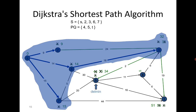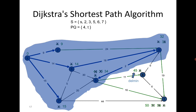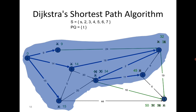Among 34, 51, and remaining vertices, 34 is the minimum, so we go to vertex 5. From vertex 5, vertex 4 is reachable with distance 45, and t is updated from 51 to 50. Among 45 and 50, 45 is the minimum, so we go to vertex 4 with distance 45.